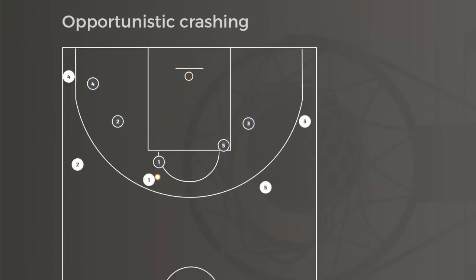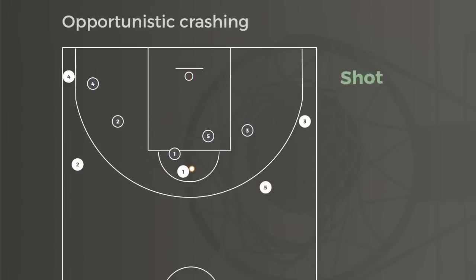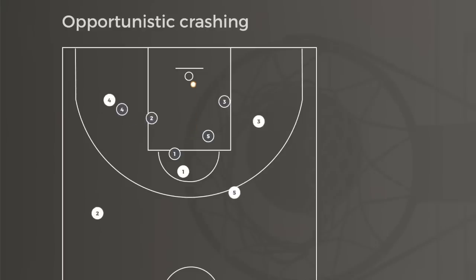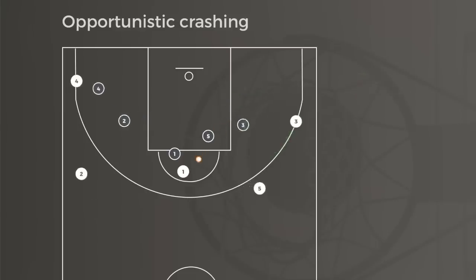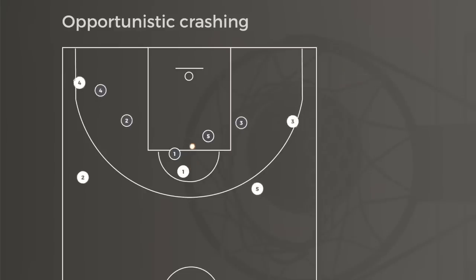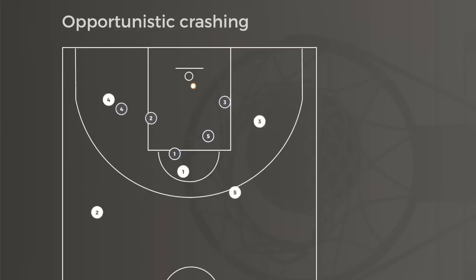By the way, there's a thought that teams have become too conservative with offensive rebounding tactics — there are links to studies in the description box below. What's apparent is that most teams are opportunistic if they're in good position to crash in for a rebound, but otherwise if boards aren't nearby, they'll run back on defense.